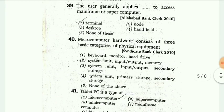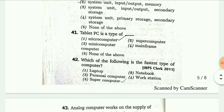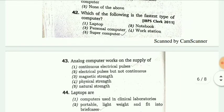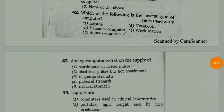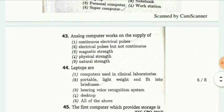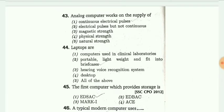The user generally applies dash to access mainframe or supercomputer. The answer is terminal. The tablet PC is a type of microcomputer. Which is the fastest type of computer? The answer is supercomputer. The analog computer works on the supply of continuous electrical pulses.